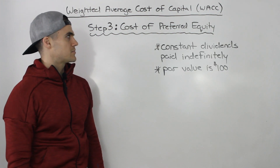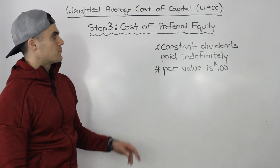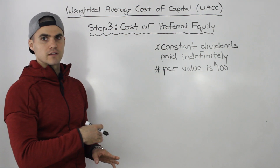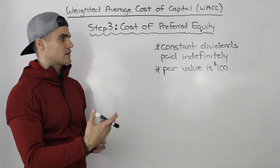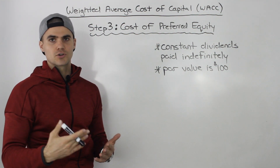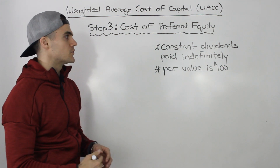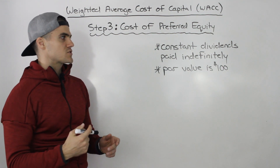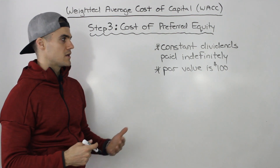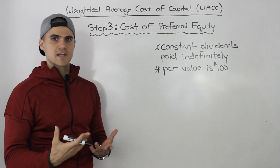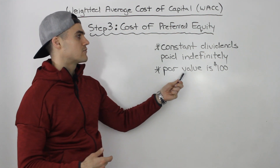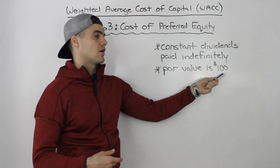Now a couple of unique characteristics about preferred equity. Preferred equity usually pays constant dividends indefinitely, forever. The dividends aren't changing usually, like in a common stock where they are growing at a certain growth rate. They're just constant — just one value.